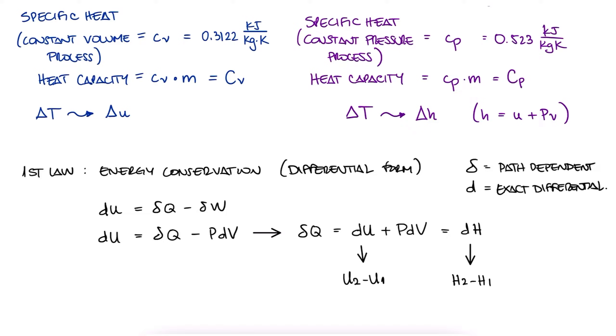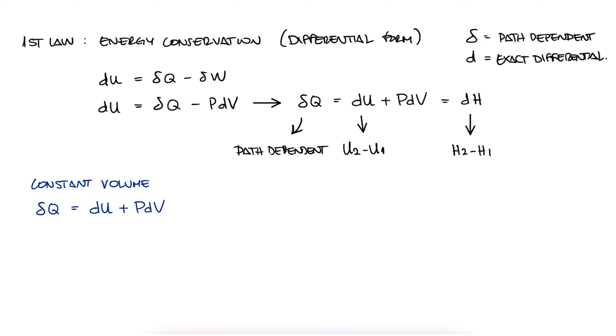The heat, on the other hand, does depend on the path we take from state 1 to state 2, and therefore we use the delta instead of d. For constant volume processes, we know that dv is zero, therefore delta q is equal to du.